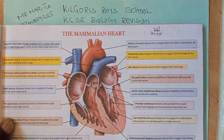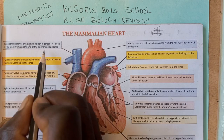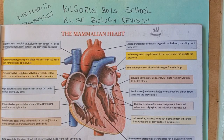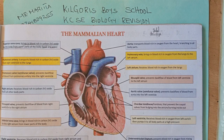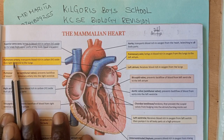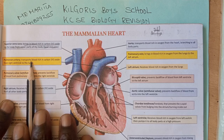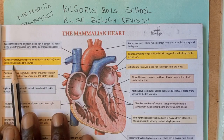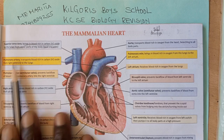The upper parts of the body normally consist of the head and the arms. Then we have the pulmonary artery — it transports blood rich in carbon dioxide from the right ventricle to the lungs.